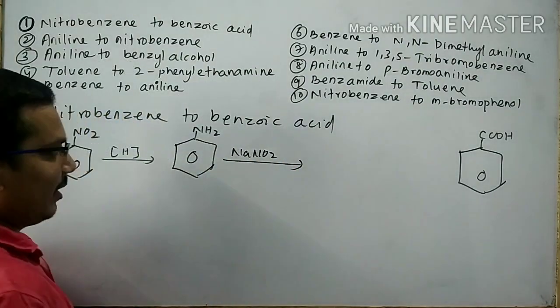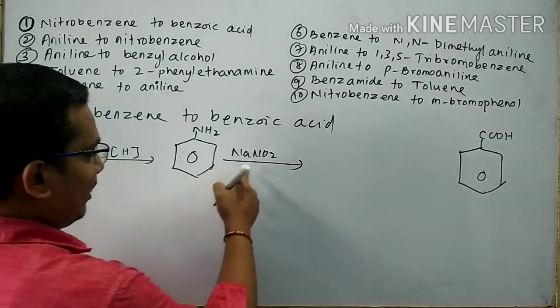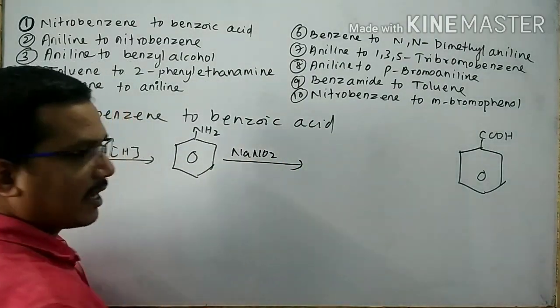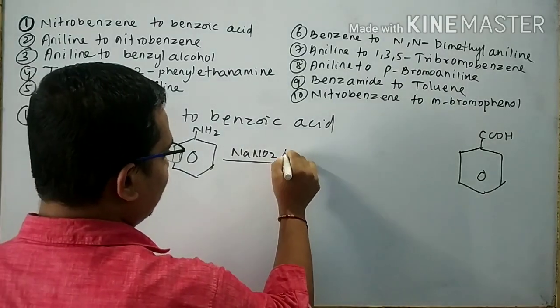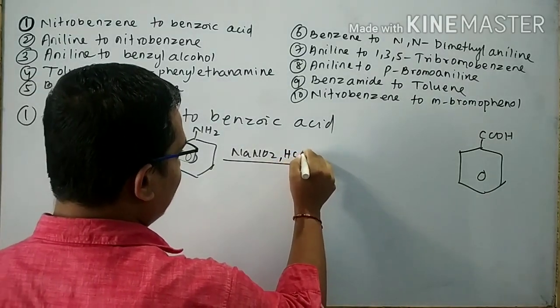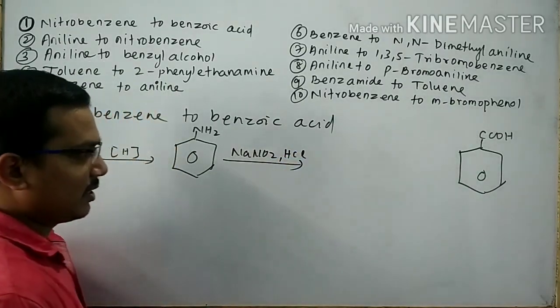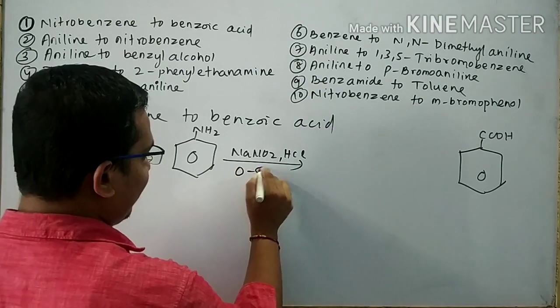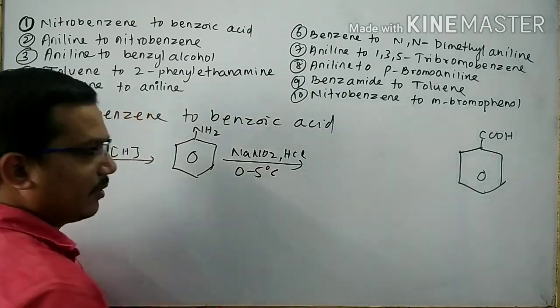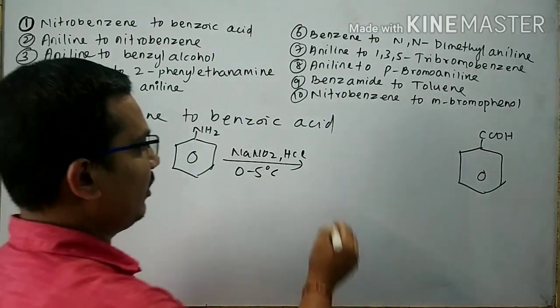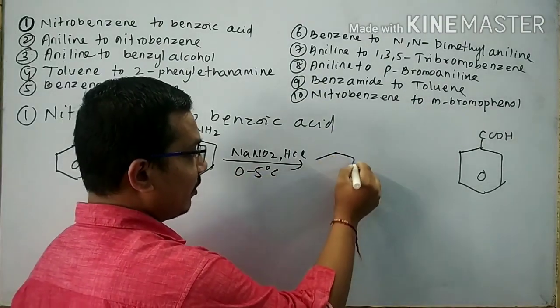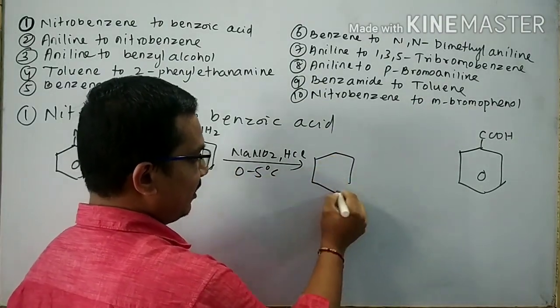When aniline is subjected to reaction with NaNO2 in the presence of HCl at 0 to 5 degrees centigrade, then aniline is converted into benzene diazonium chloride (BDC).